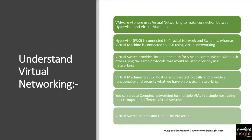First, let's understand virtual networking. VMware vSphere uses virtual networking to make connections between the hypervisor and virtual machines. You have the hypervisor as an ESXi host, which is a physical server with connectivity from the physical network. On top of the hypervisor you create virtual machines, and to make the connectivity between those virtual machines and the hypervisor, you create virtual networking — either through a standard switch or a distributed switch.